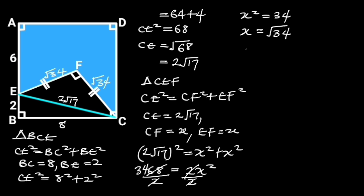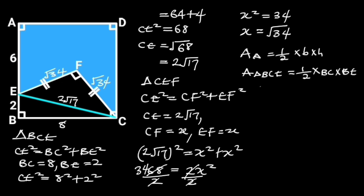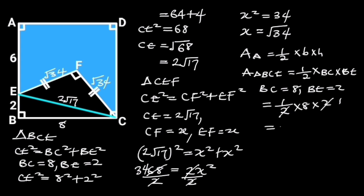Going further, let's find the area of triangle BCE. The area of a triangle is given as ½ times base times height. It follows that the area of triangle BCE will be ½ times BC times BE. BC is equal to 8 and BE is equal to 2. Plugging in these values gives us ½ times 8 times 2, which is equal to 8 square units.